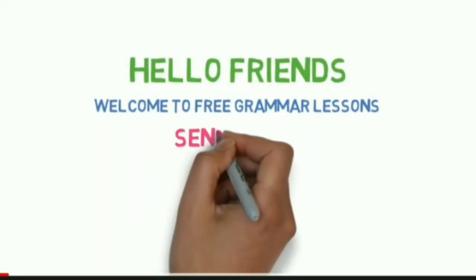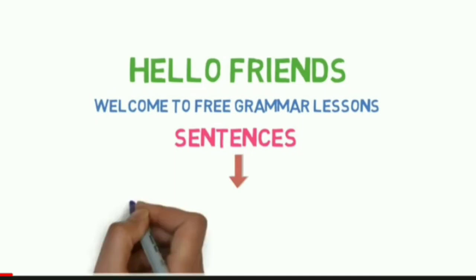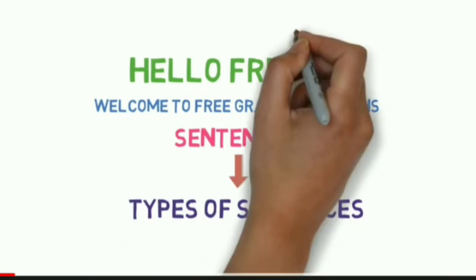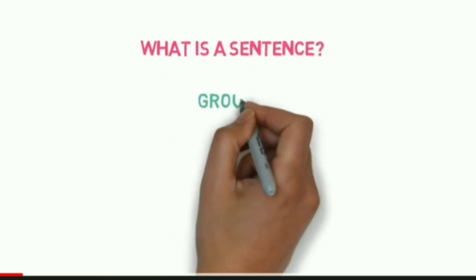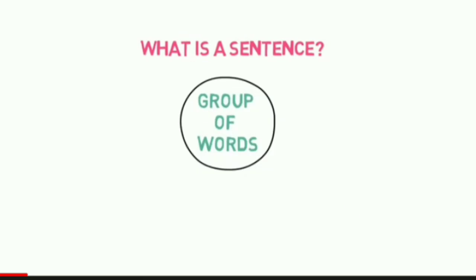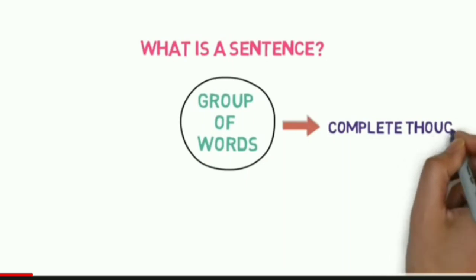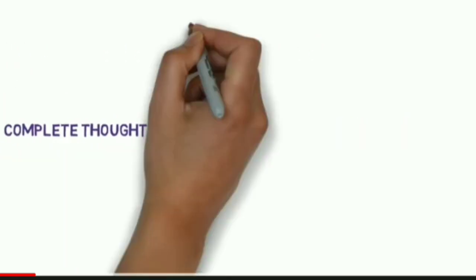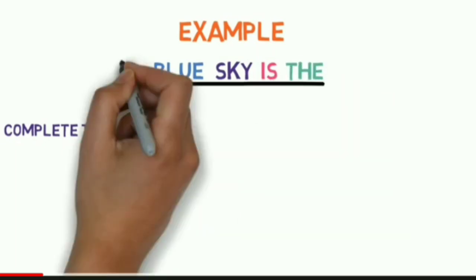Today we are going to learn about sentences — what they actually are and different types of sentences. A sentence is a group of words with three important characteristics. First, it expresses a complete thought or an idea. For example, 'blue sky' is a group of words, but is it conveying any meaning? No, so it's not a sentence.